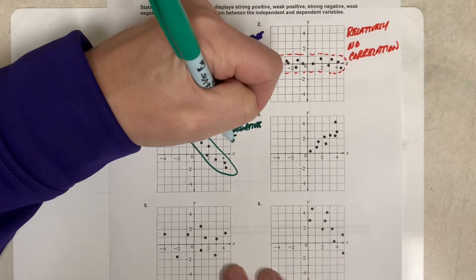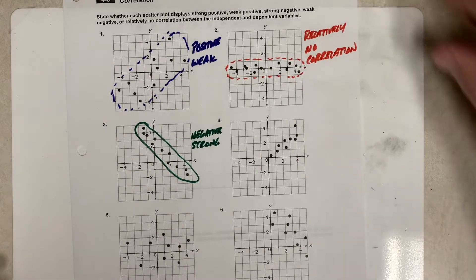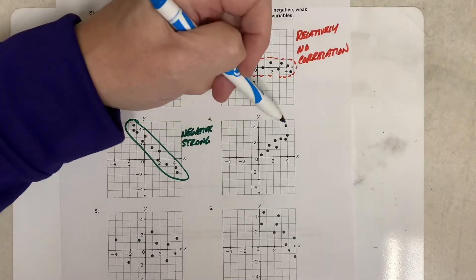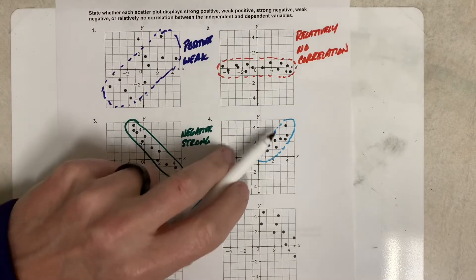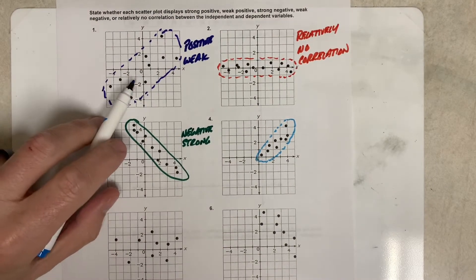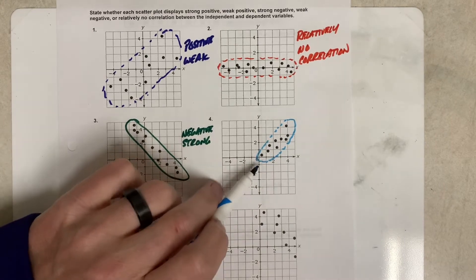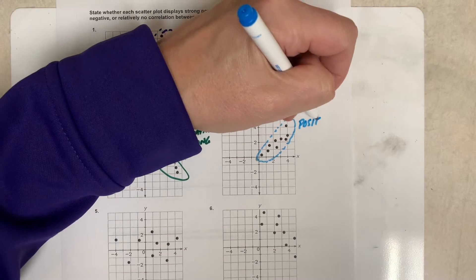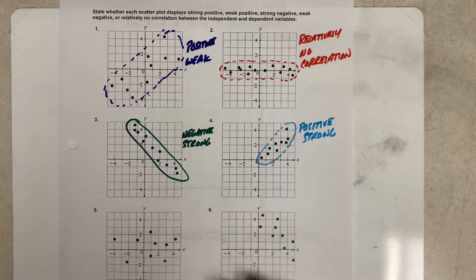All right, let's look at number four. Number four has these dots, and if I kind of circle them in here, they are definitely not as spread out as number one. They're more tightly compact together, and it is going up from left to right here, so we're going to say that that's positive strong. We'll call that strong correlation.